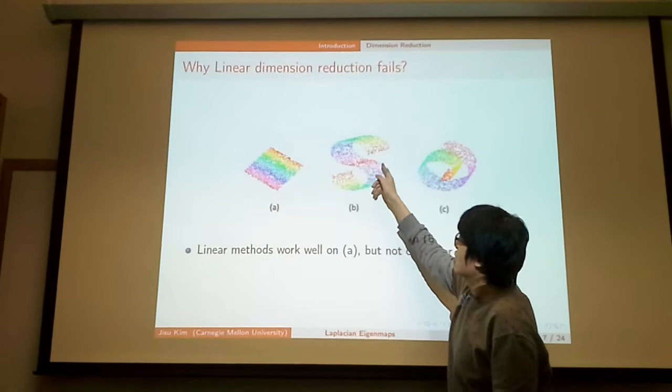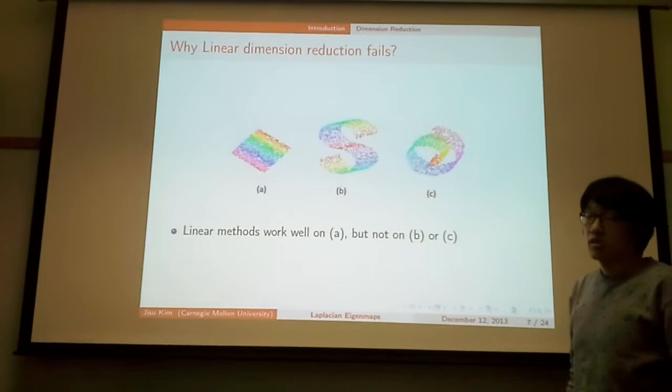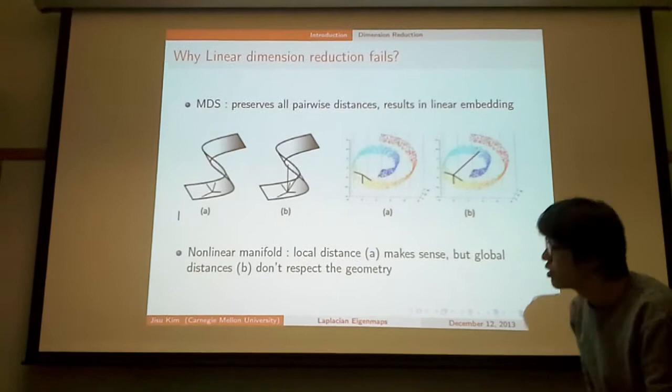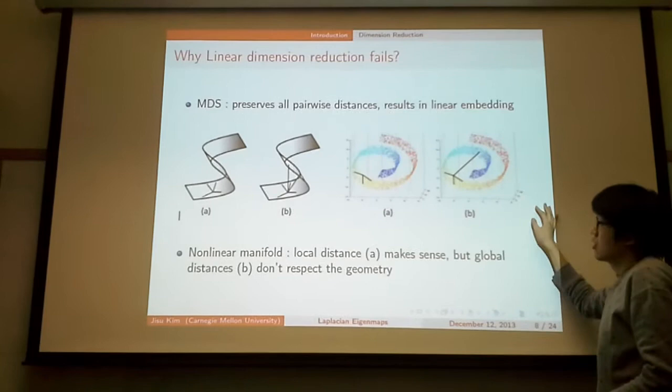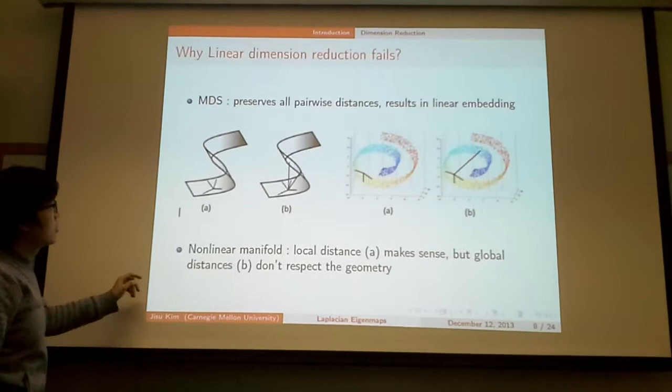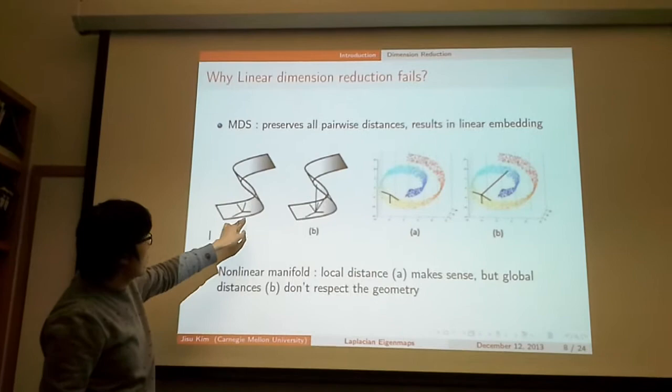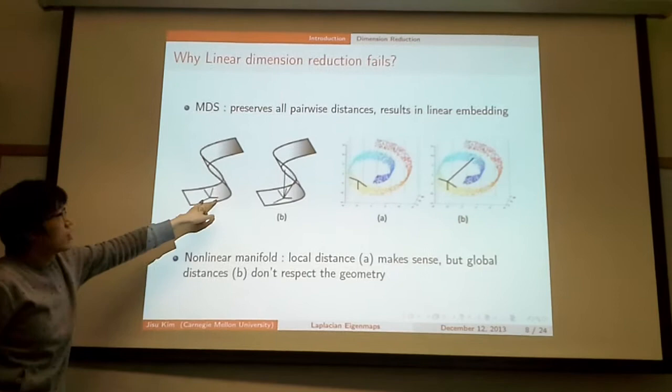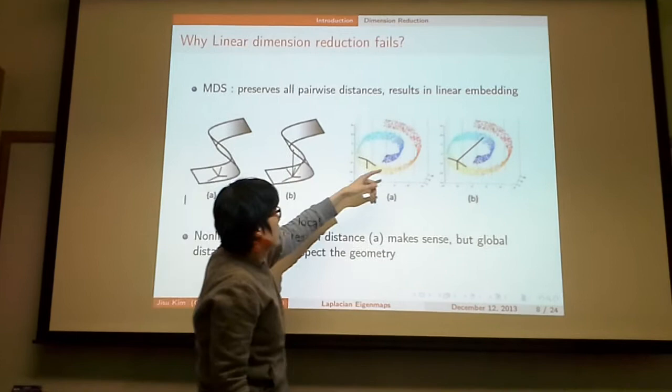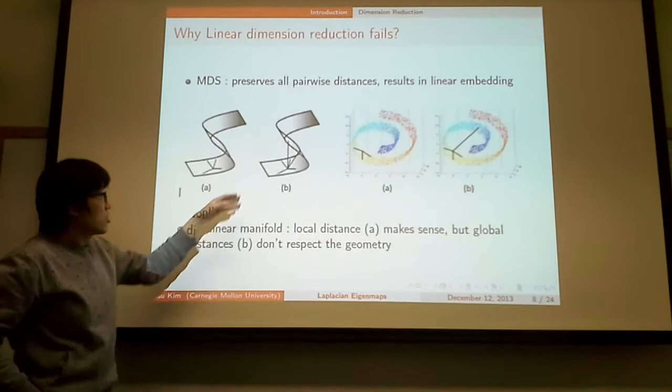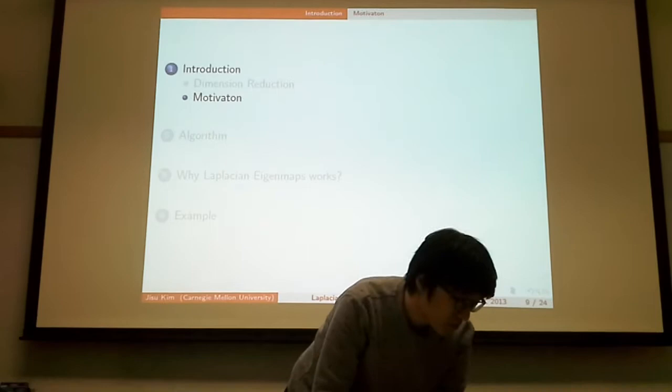Imagine that your manifold is either a square, or an S-curve, or a torus. The linear method works well on A, but not on B or C. Why does that happen? For MDS, what MDS tries to do is they try to preserve all pairwise distances, which results in linear embedding. However, if your manifold is non-linear, then if you pick two points and the distance between two points is close, then their distance actually reflects the geometry of the non-linear manifold. But if your two points are very far, then this distance is meaningless. They do not relate to the actual geometry of the non-linear manifold.